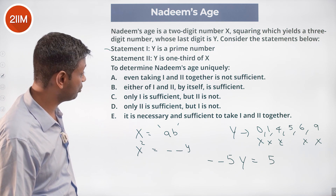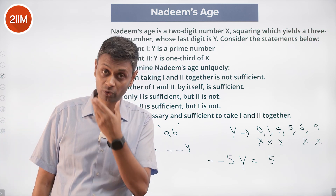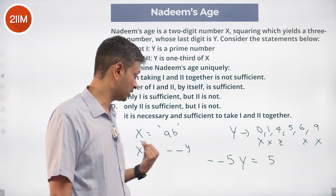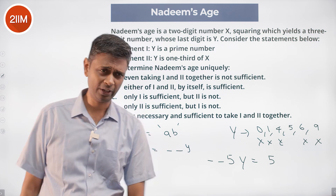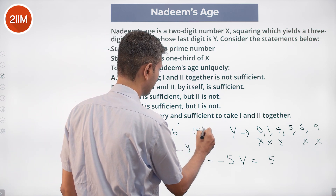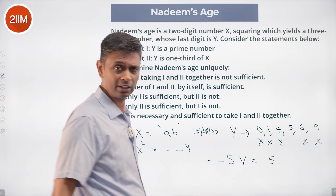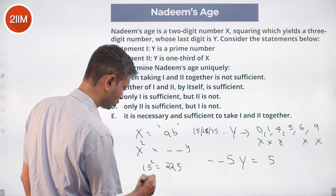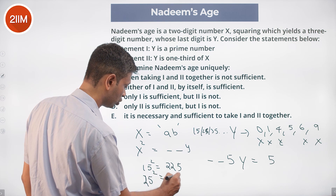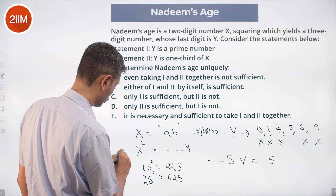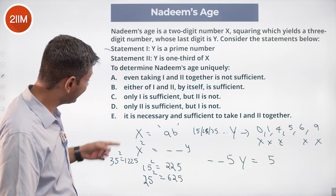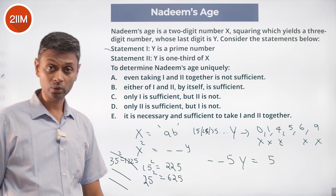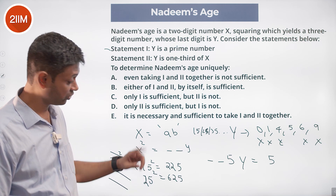If X squared ends in 5, then X squared is a multiple of 5, which means X must also be a multiple of 5 — so X should end in 5. That means X could be 15, 25, 35, 45, and so on. Now: 15²=225, 25²=625, 35²=1225. We know X squared must be a three-digit number, so 35², 45², 55² and beyond are all ruled out.